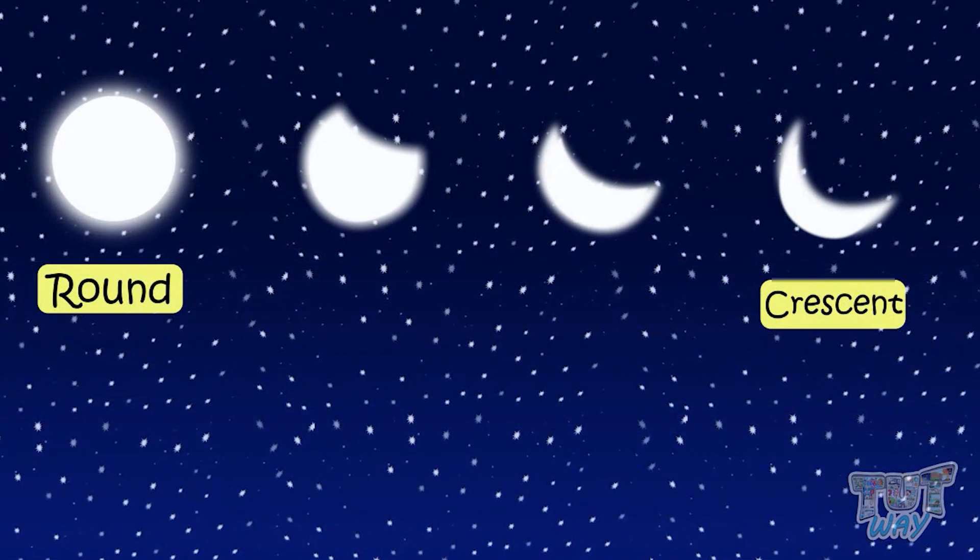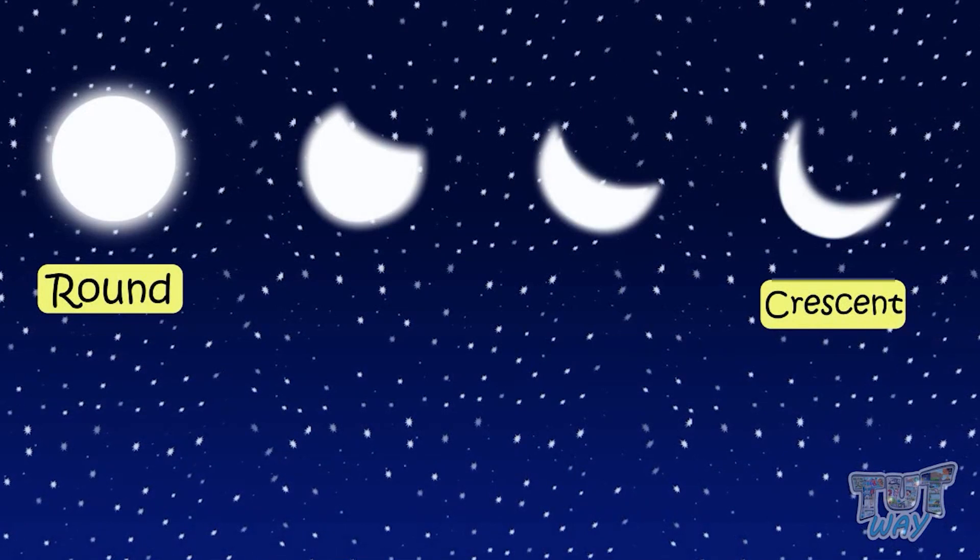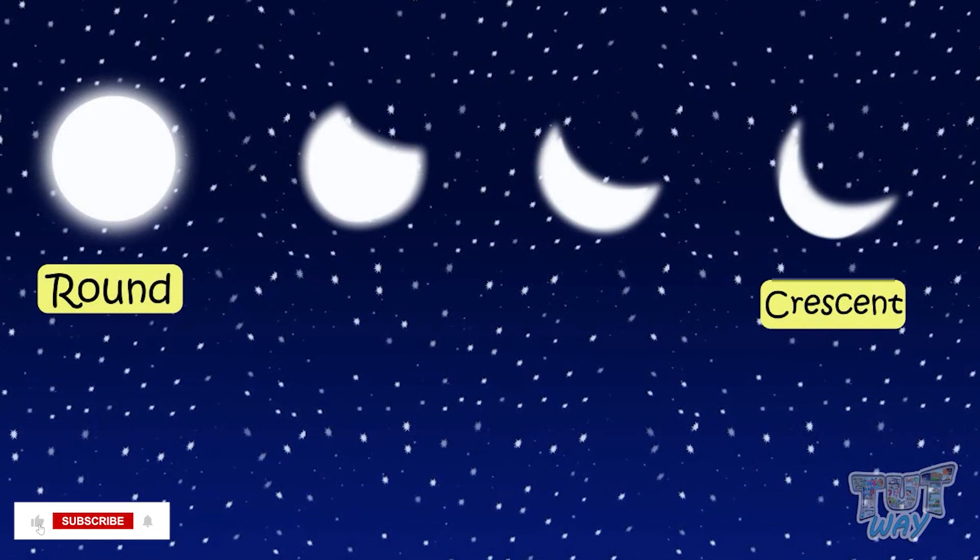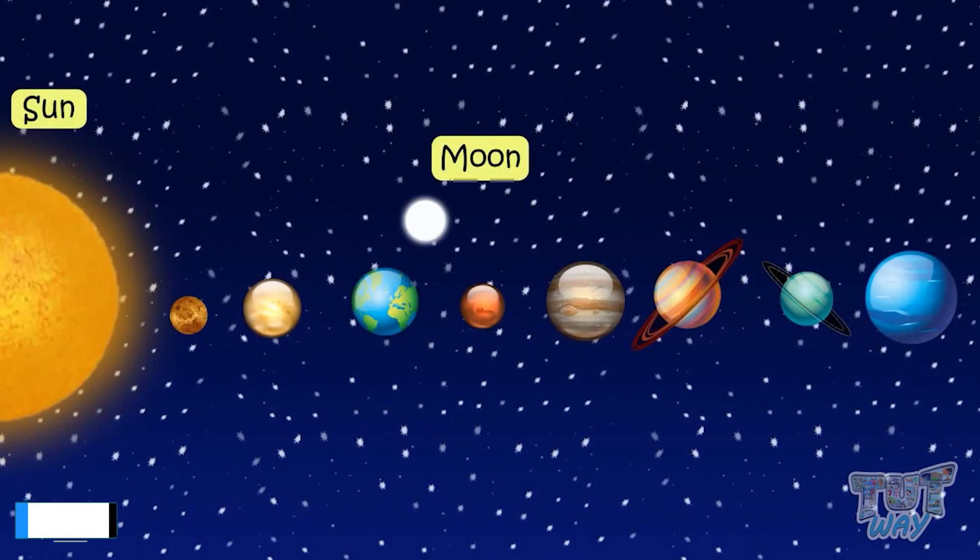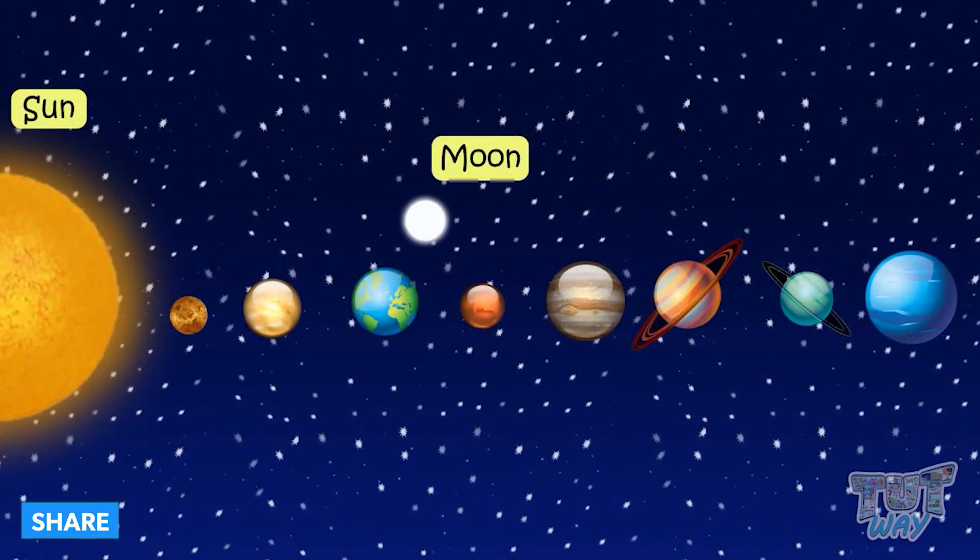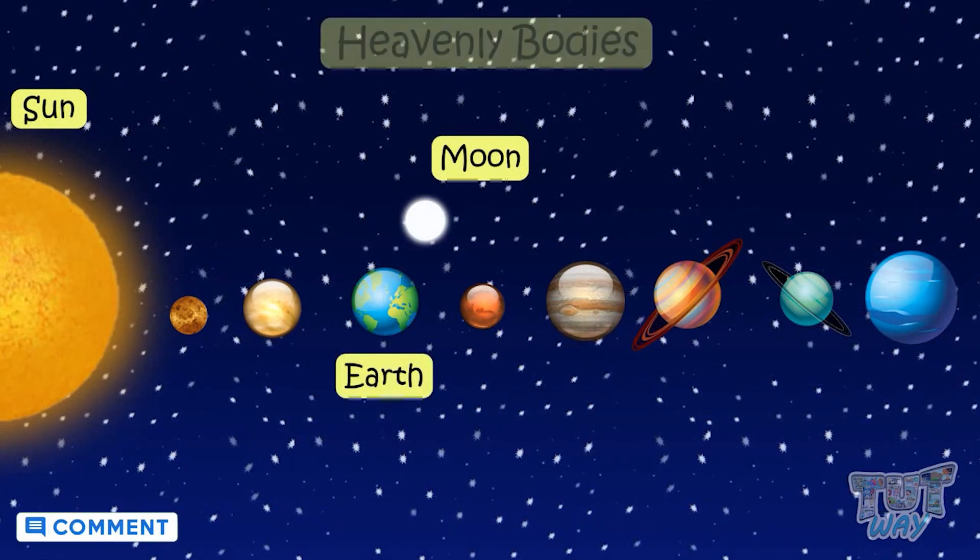We will learn more on why it changes its shapes in our higher grades. All the objects like stars, moon, sun that we see in the sky that are very far from the Earth are called heavenly bodies.